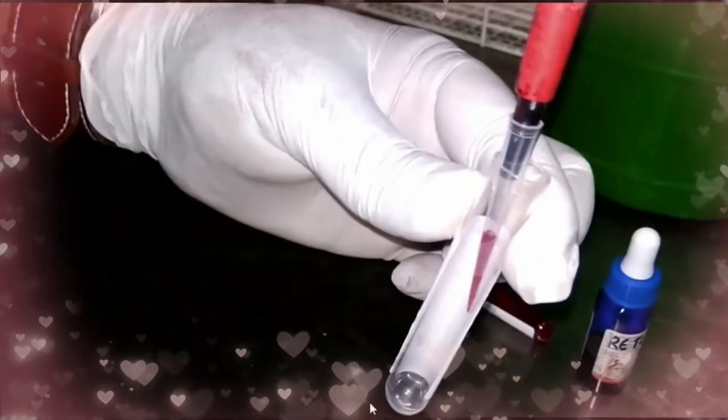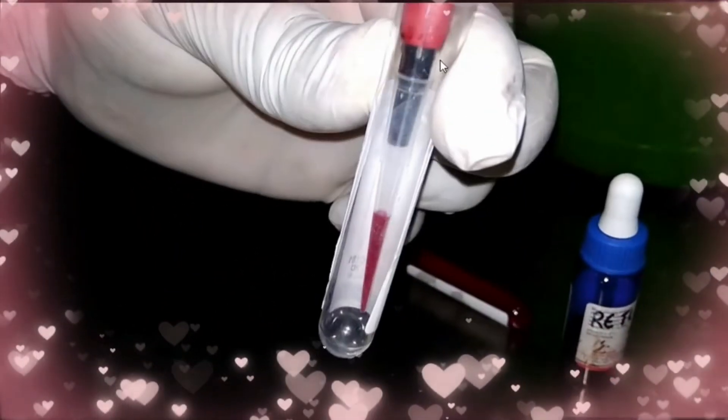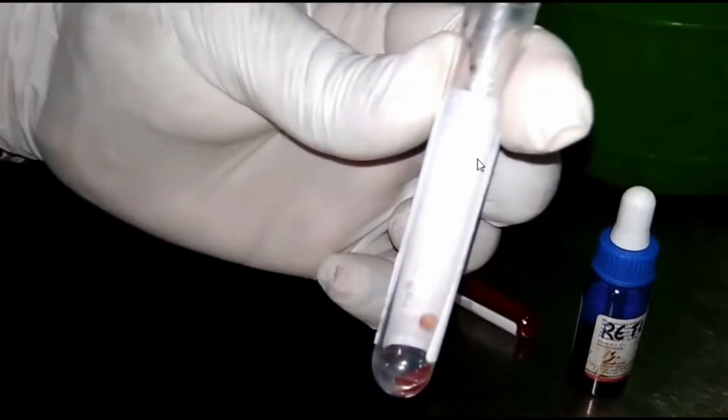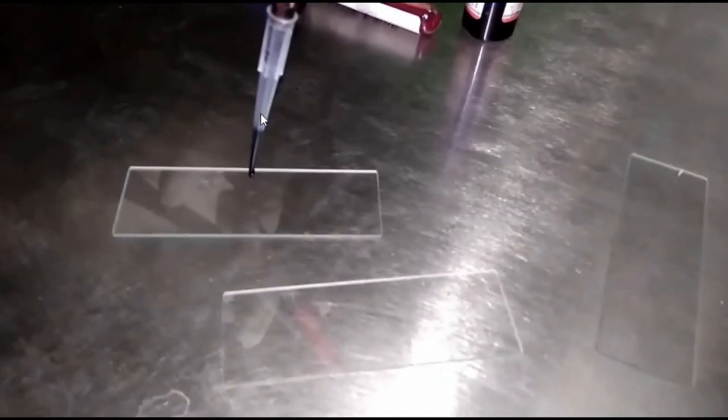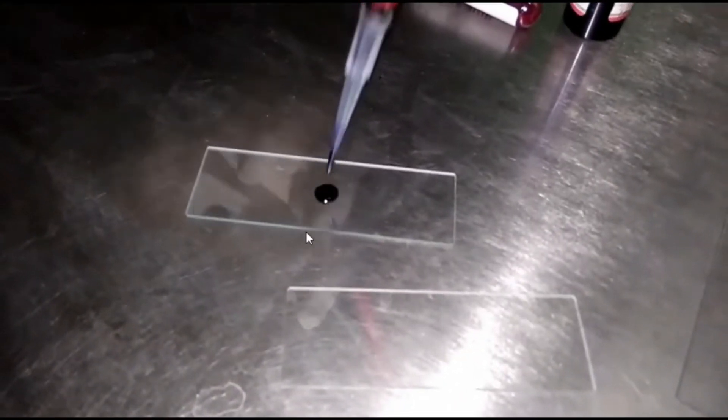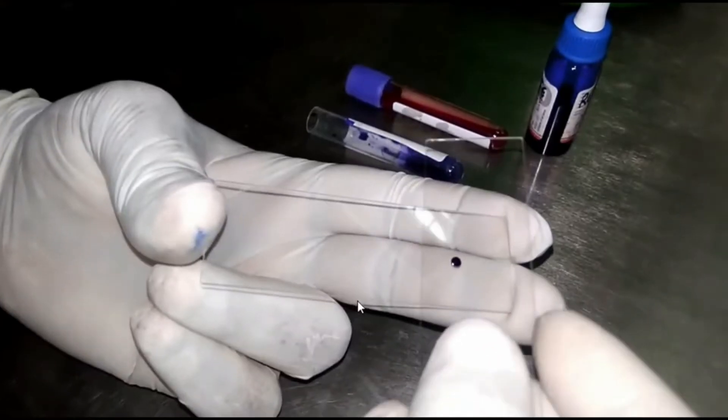Take equal amount of blood and vital stain. So here we have taken 100 microliters blood and 100 microliters methylene blue. Mix properly. Now put a drop on this slide and a small drop on this slide. Make a smear in this way.